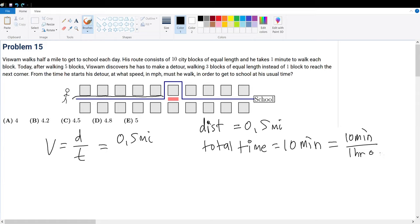For every hour there's 60 minutes, so in other words this is equal to 1 over 6 hours. With this understanding, this divided by 1 over 6 hours will give us 3 miles per hour. That's his velocity originally.